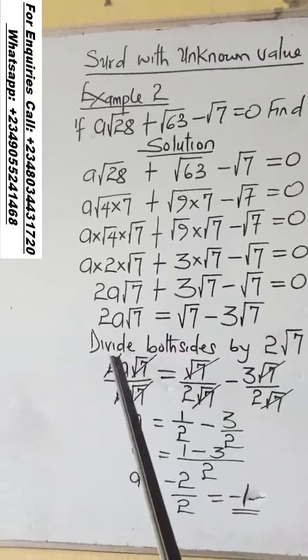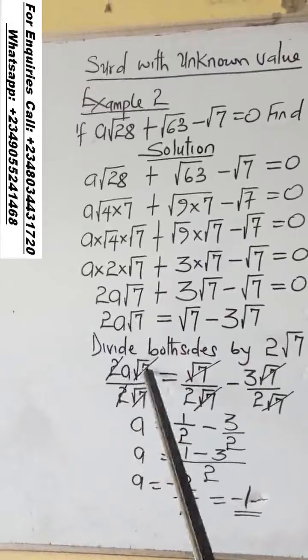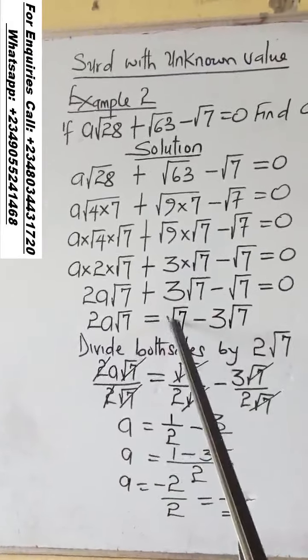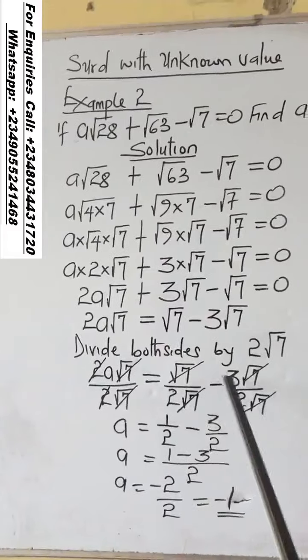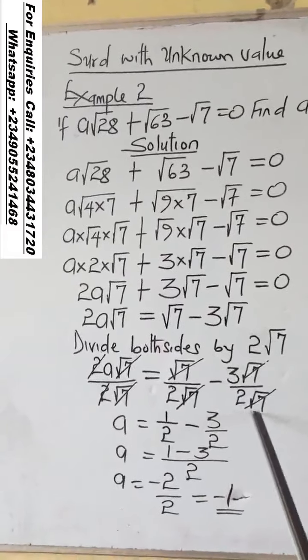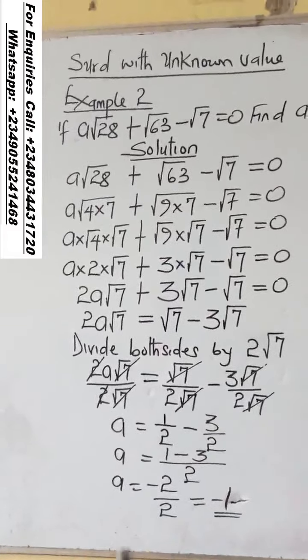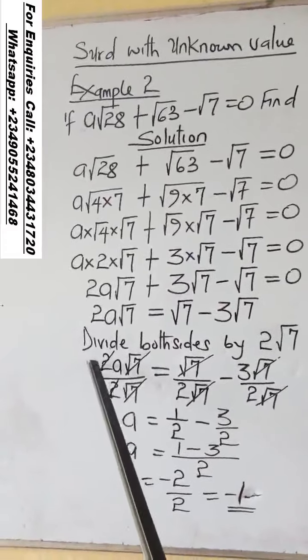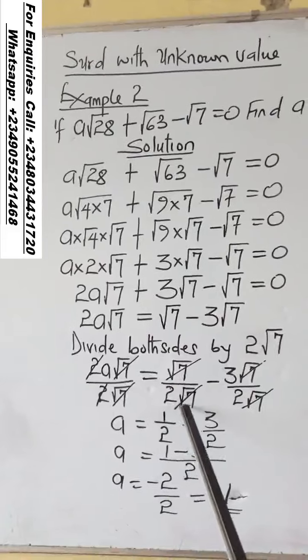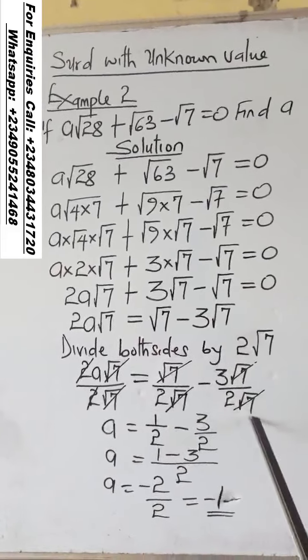So if you do that, 2A root 7 divided by 2 root 7, root 7 divided by 2 root 7, 3 root 7 divided by 2 root 7. You can see 2 will cut 2, root 7 will cut root 7, root 7 will cut root 7, root 7 will cut root 7.